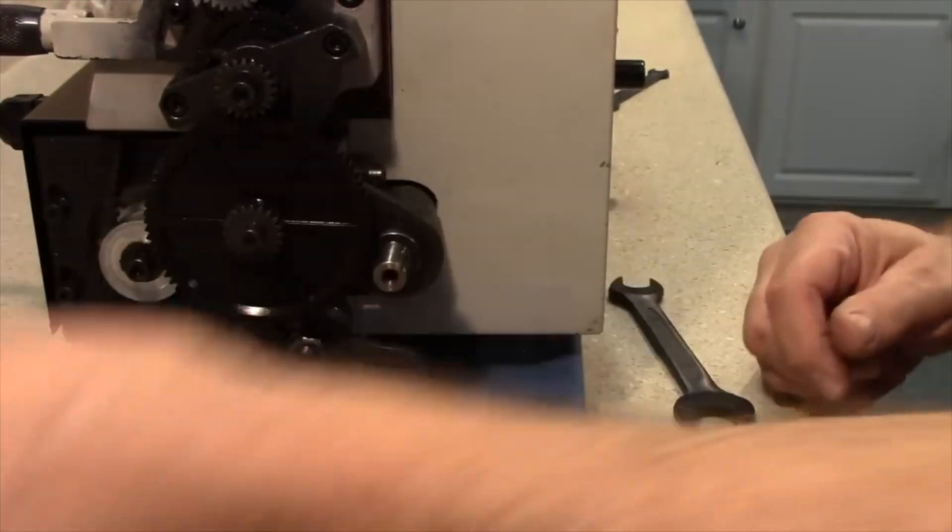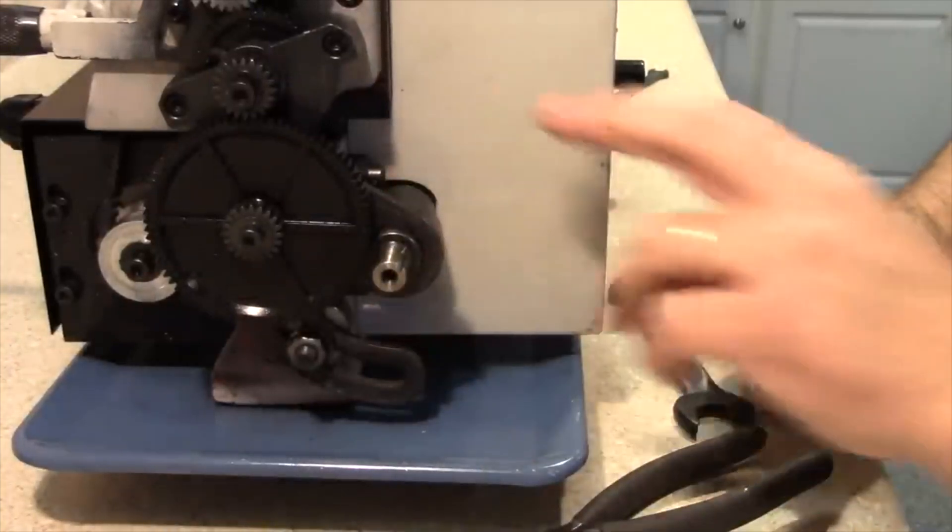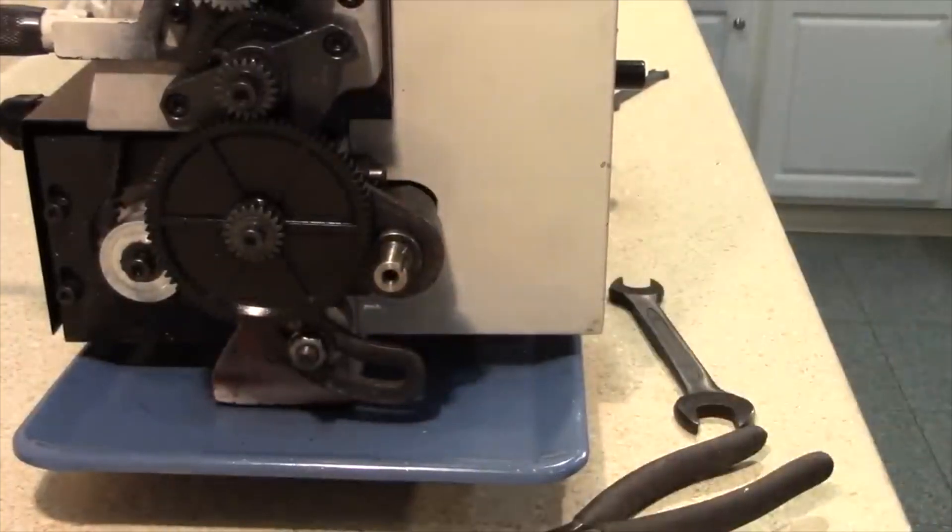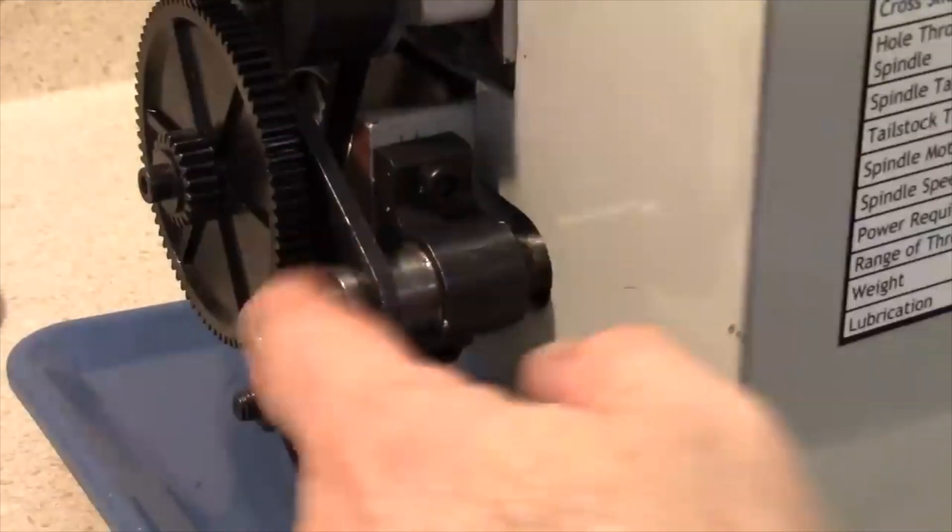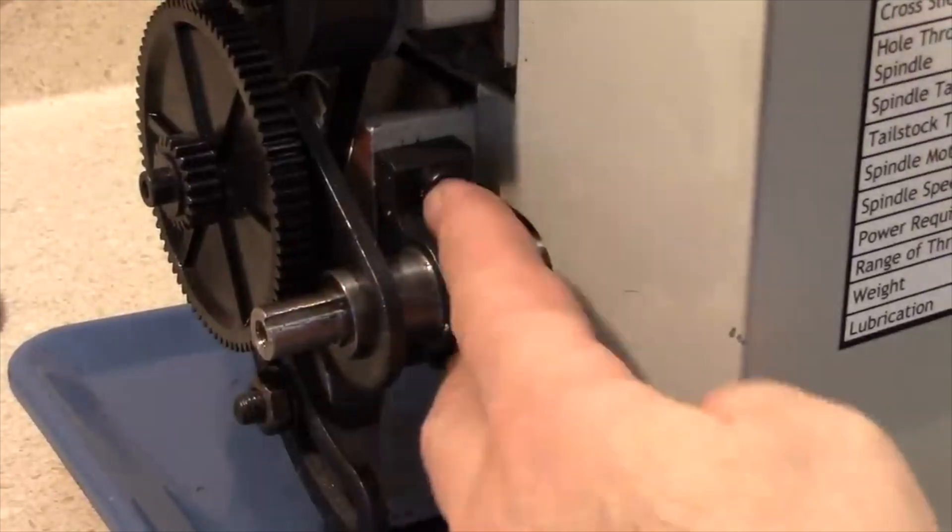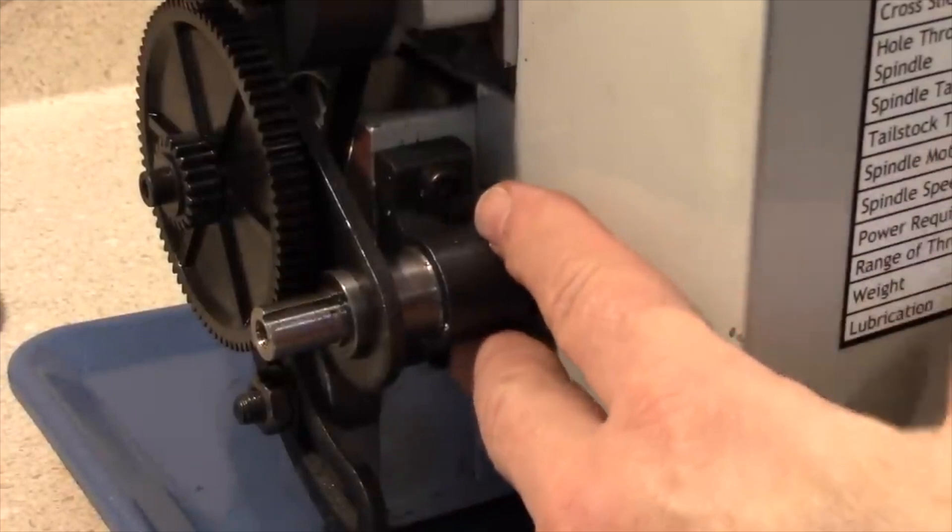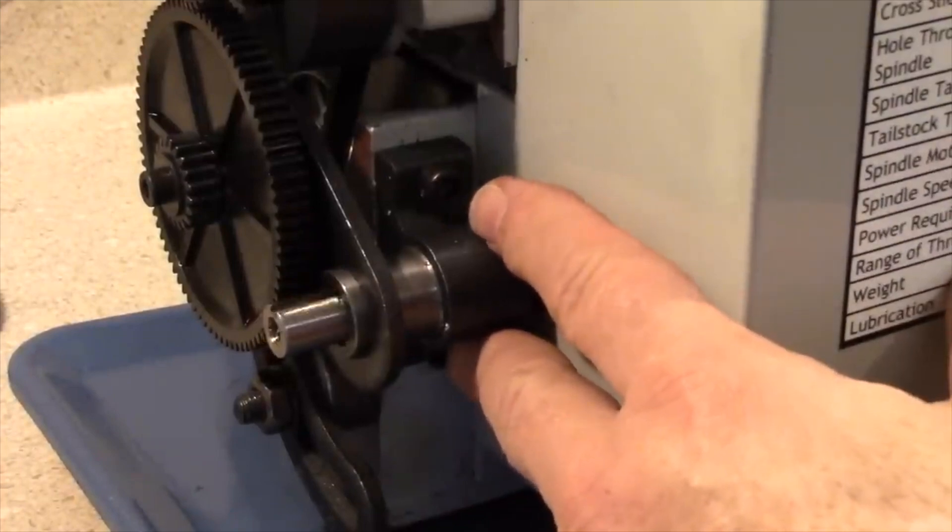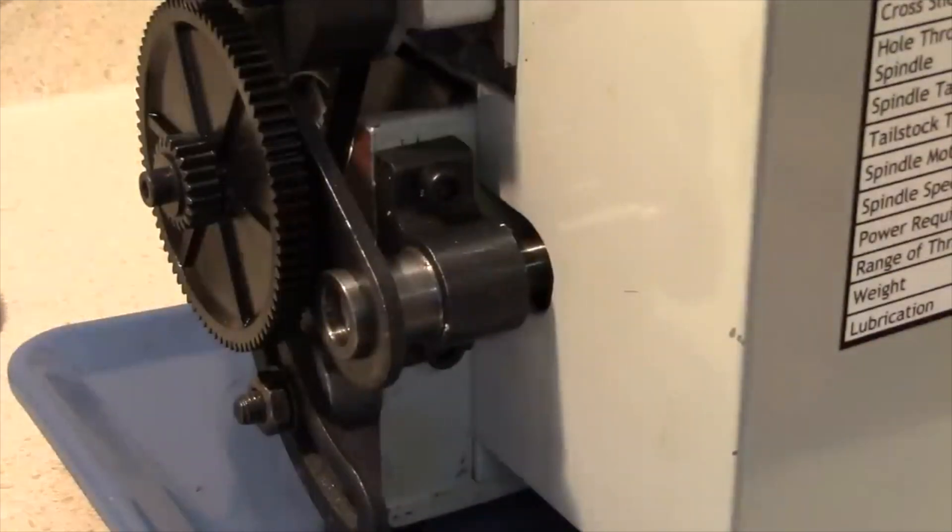Now with those components removed we can now slide the lead screw out. There is a bushing here just like the one on the other end. You can see the end of the lead screw comes out and here's the bushing that holds it in place. I'm just going to grasp the right end and wiggle it back and forth to slide it out to the right.